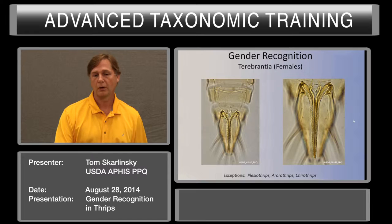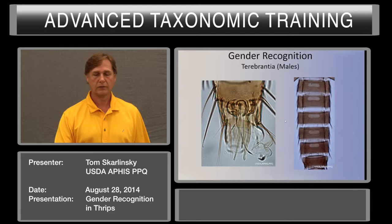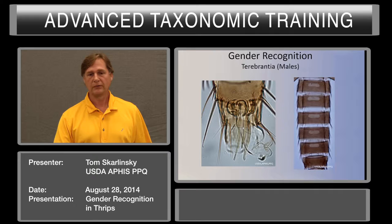Now the males obviously don't have an ovipositor. They have an ediagus, and that's in this area right here. One thing to notice is that in the Terebrantia, males tend to be a little bit smaller.